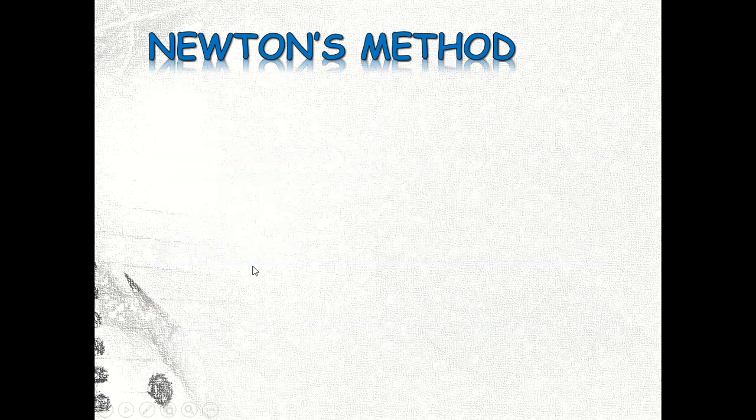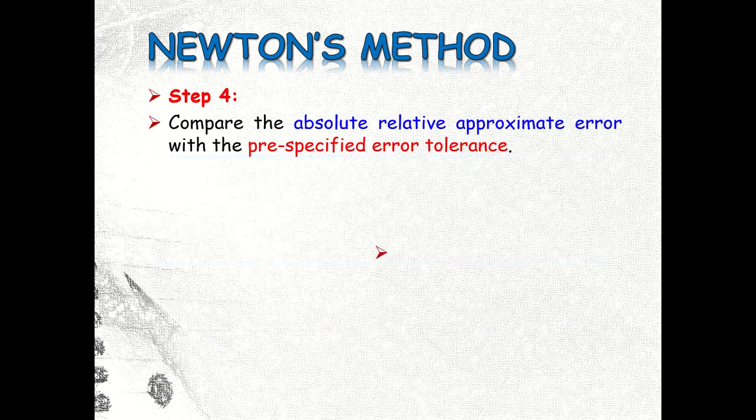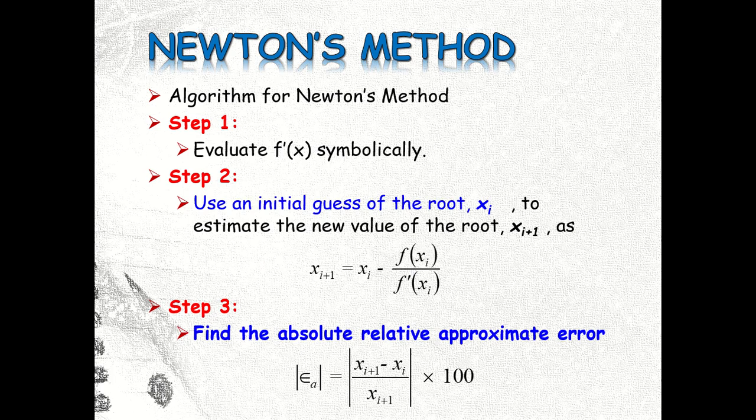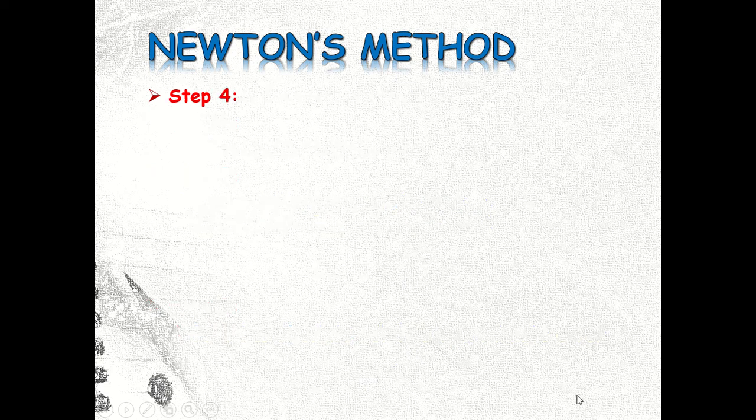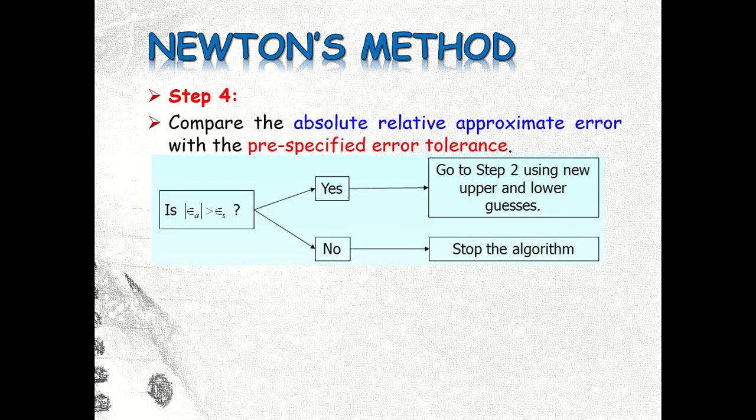Okay, and then we have here the calculation equation. So we have to calculate x sub i plus 1 minus x sub i divided by x sub i plus 1, the absolute value of this times 100. So if this value, according to this flow chart, if this one is greater than ES, then you need to go to step number 2.